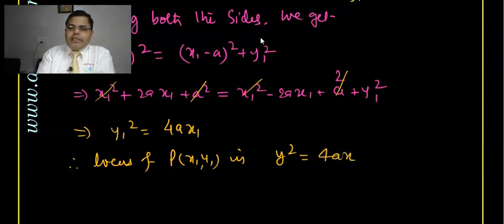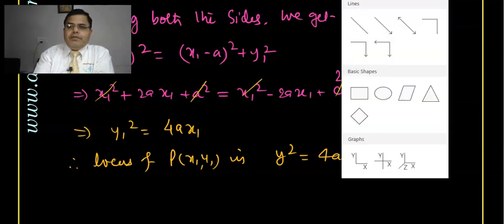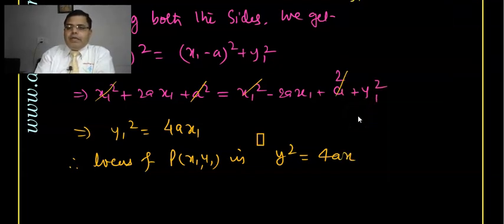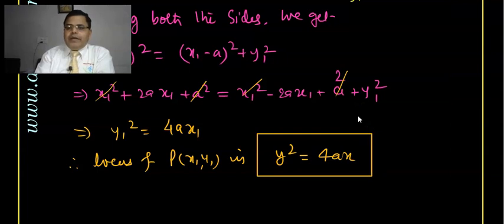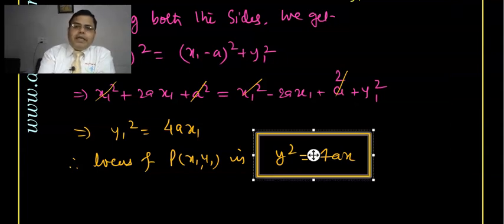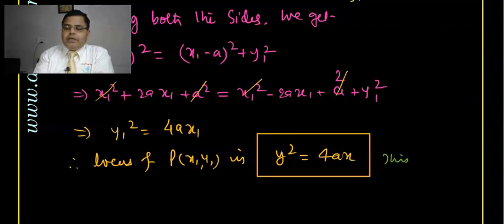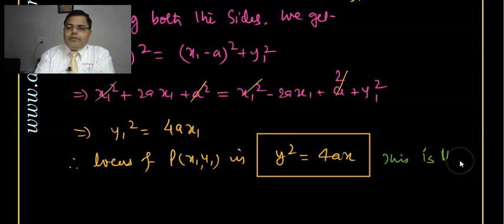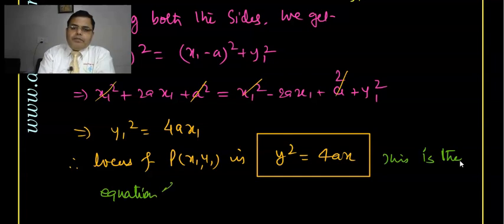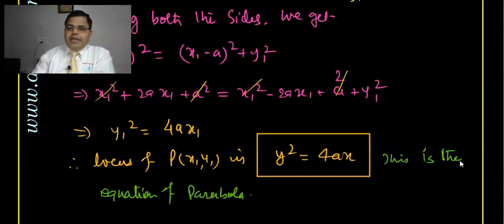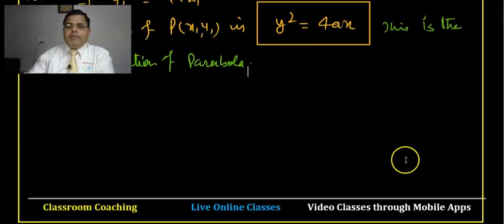Expanding: x₁² + 2ax₁ + a² = x₁² − 2ax₁ + a² + y₁². Cancelling x₁² and a² from both sides: 2ax₁ = −2ax₁ + y₁², which gives y₁² = 4ax₁. Therefore the locus of P(x₁, y₁) is y² = 4ax. This is the equation of the parabola whose focus lies on the x-axis.